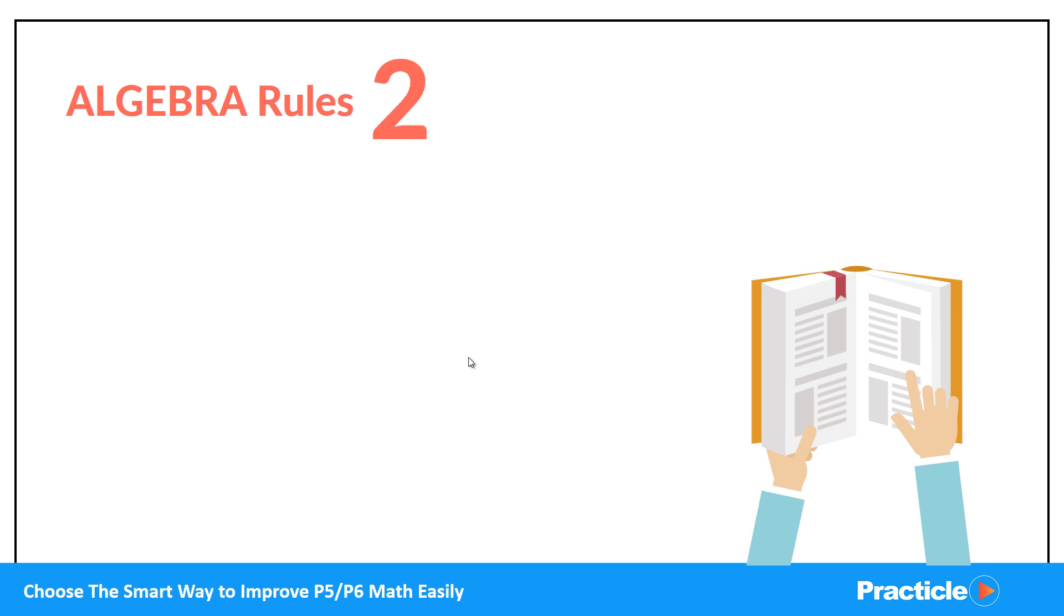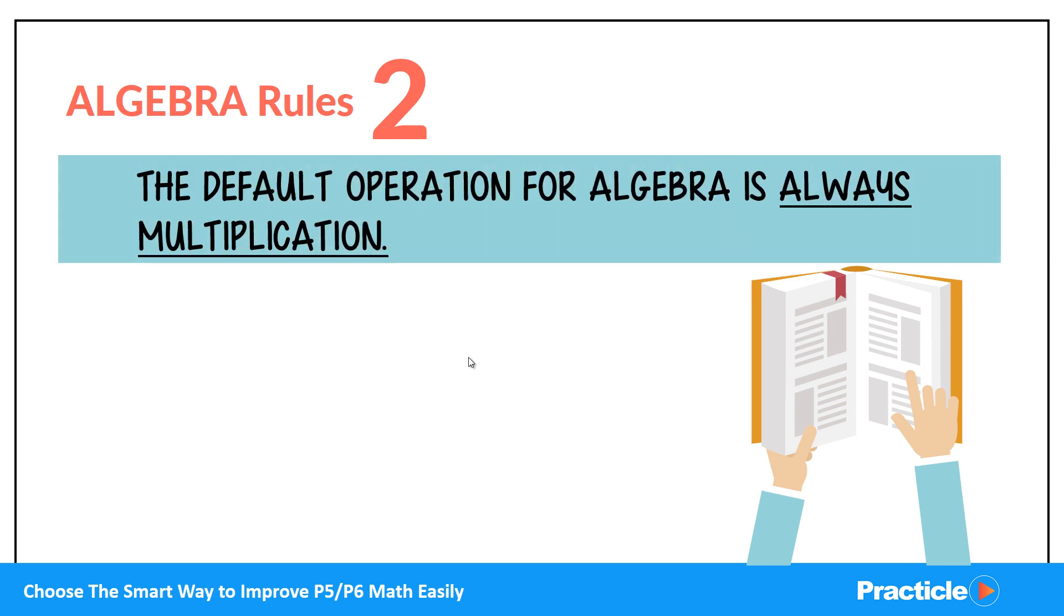Now let's move on to the next rule. Rule number 2. The default operation for algebra is always multiplication. So like our usual numbers, algebra also has four basic operations: addition, subtraction, multiplication, and division. However, in algebra, multiplication is always the special default operation.